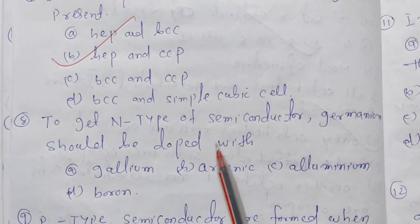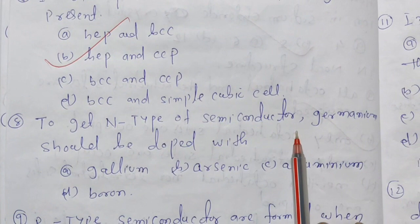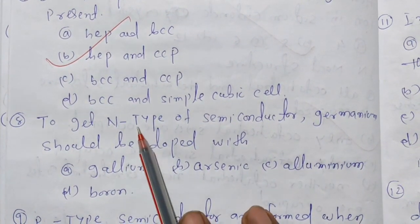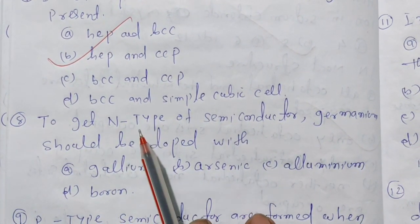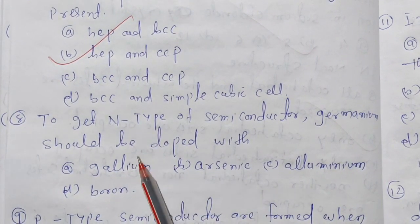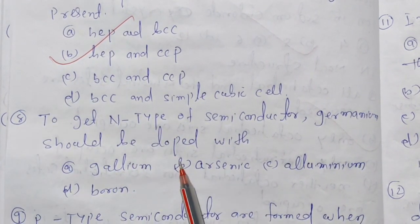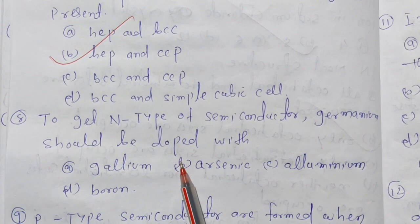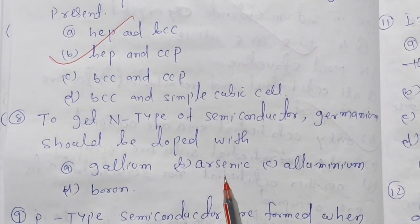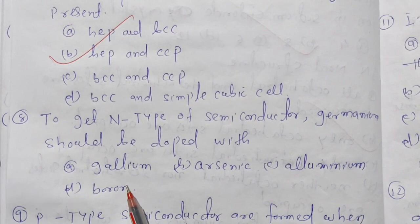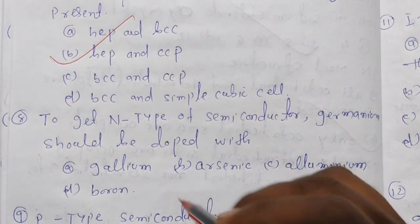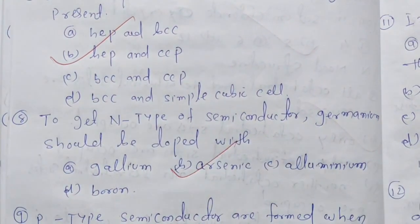To get an N-type semiconductor, germanium should be doped. N-type means a negative-type semiconductor, which increases conductivity. The options are gallium, arsenic, aluminium, or boron. The answer is option B, arsenic.